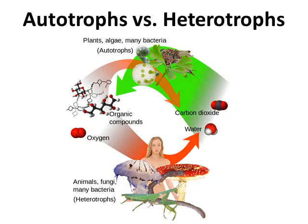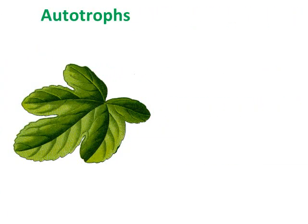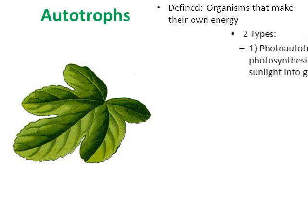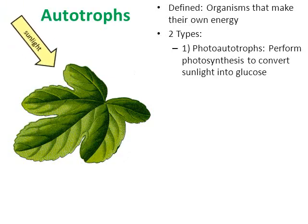Let's start with the autotrophs. Autotrophs, when you look at the basic definition, are organisms that can make their own energy. Now there are two kinds of autotrophs — one we're more familiar with and one might be a little mysterious. The first type are called the photoautotrophs, and these are the ones that use sunlight to do photosynthesis.